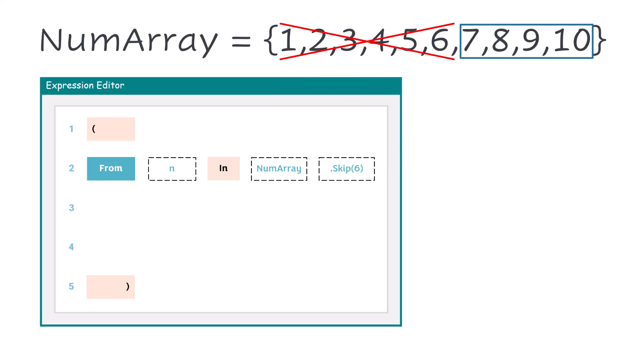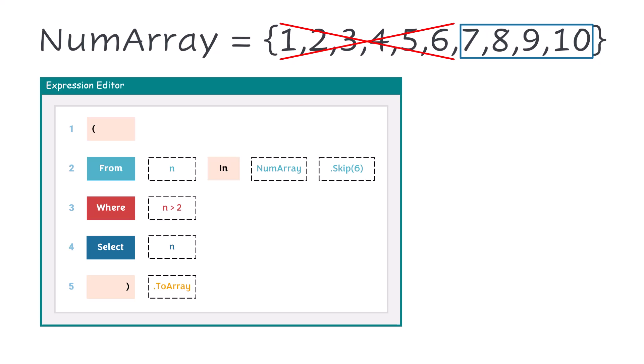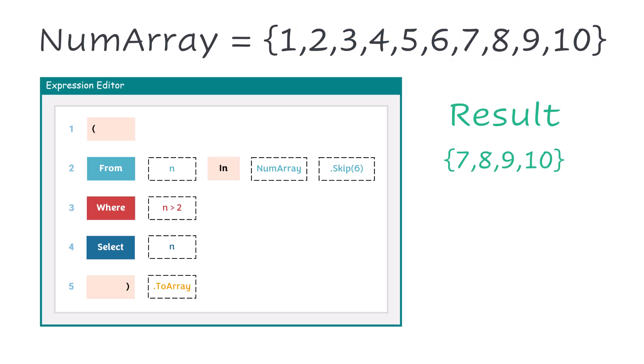It means the array now has only the last 4 numbers. After that we do the steps in the query for only these numbers — I have here again the same condition. The result in this case is these 4 numbers as output, because all these numbers meet the condition — they are greater than 2.